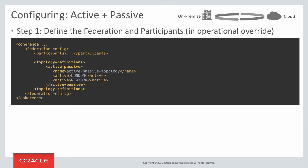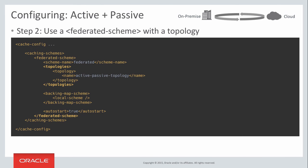For active-passive, we actually have to configure the topology. As before, we define our participants, but now we also specify the topology definitions. We can say active-passive, give it a name, and specify which are the actives and which are the passives. Then in our cache configuration, we specify the federated scheme and indicate which topology this federated caching scheme is used in. Caches can be associated with multiple topologies, so you can specify many topology names.